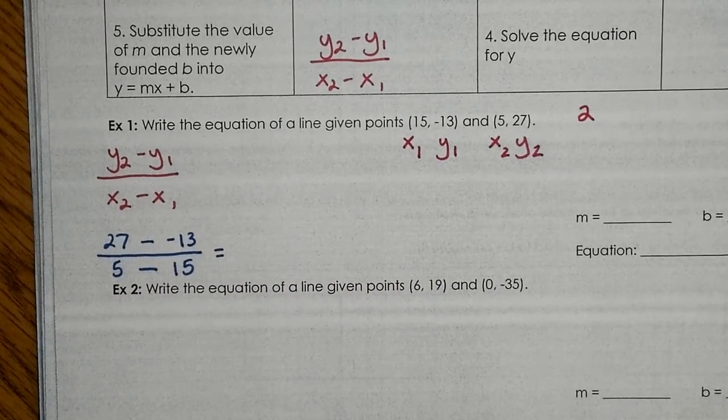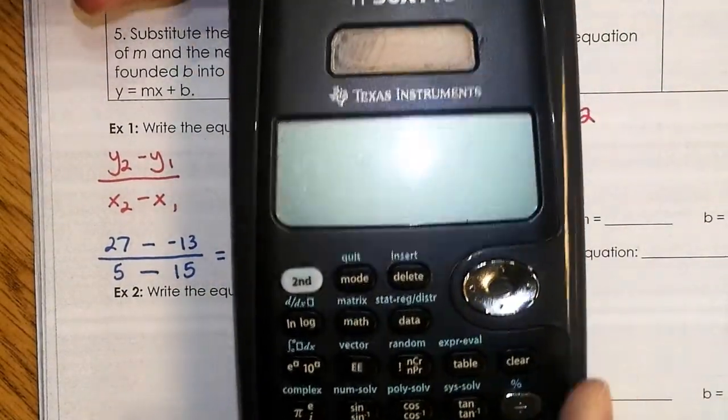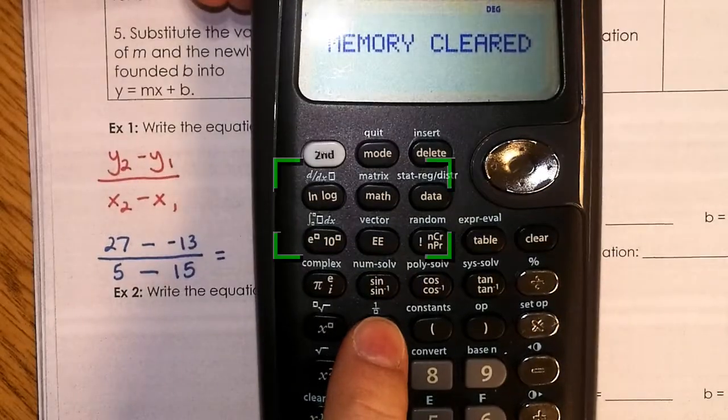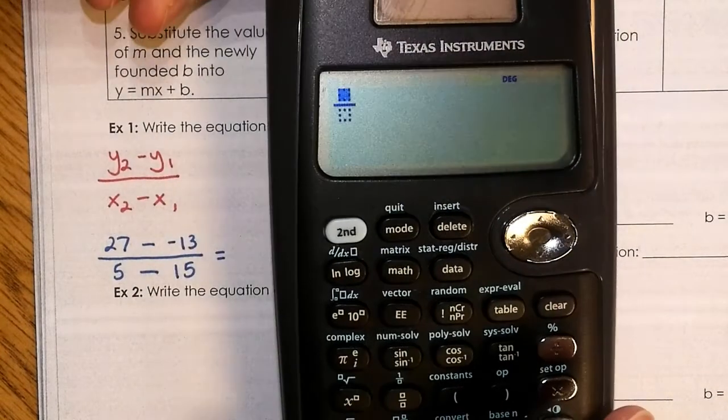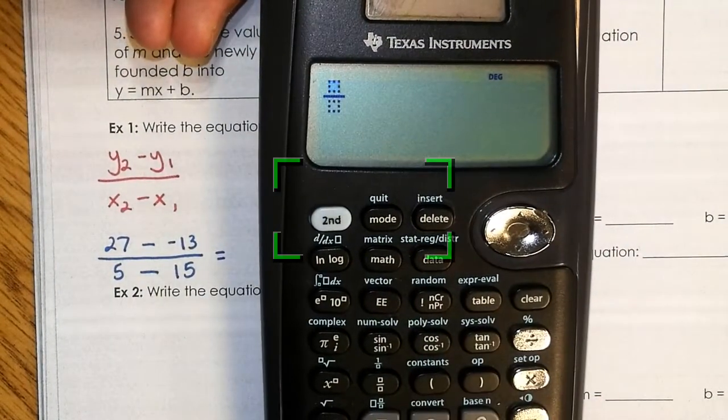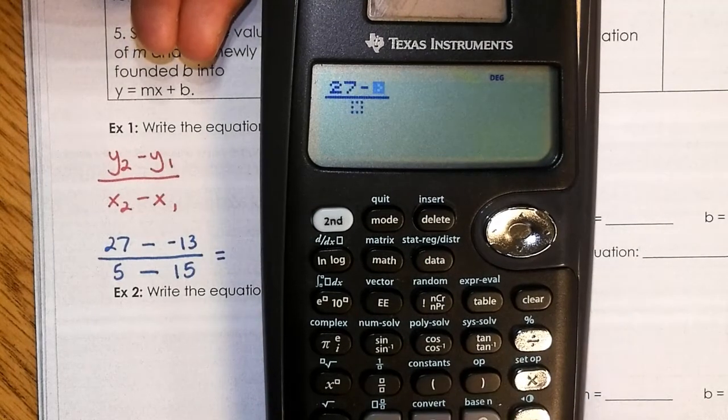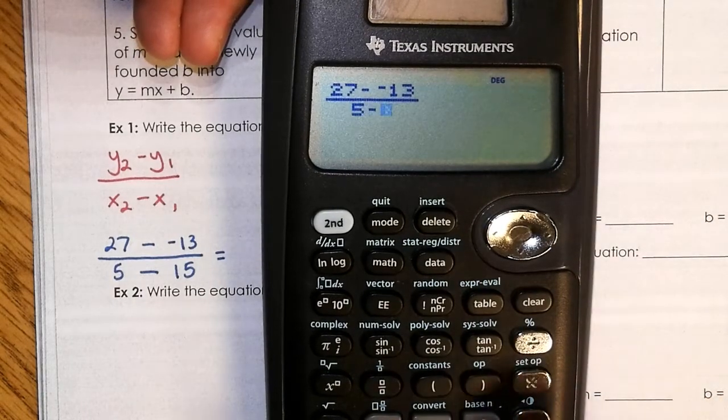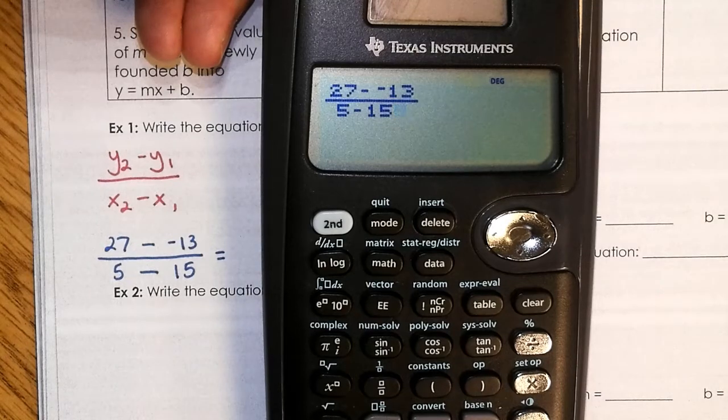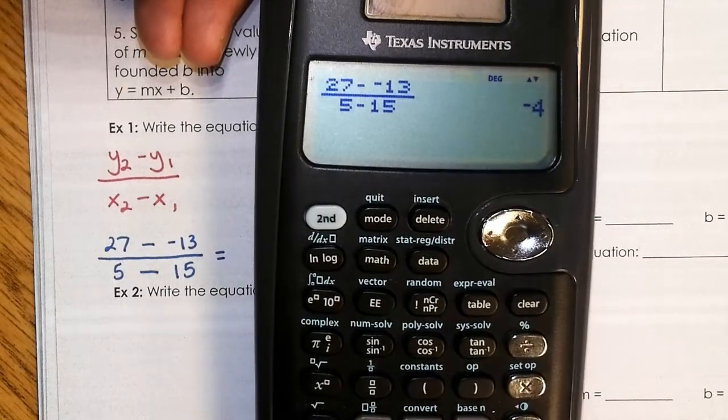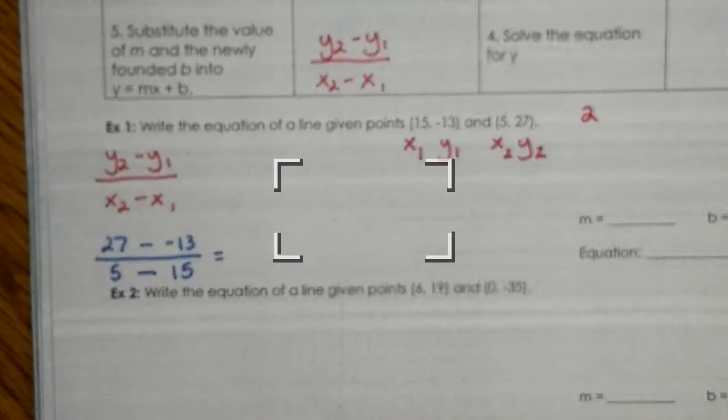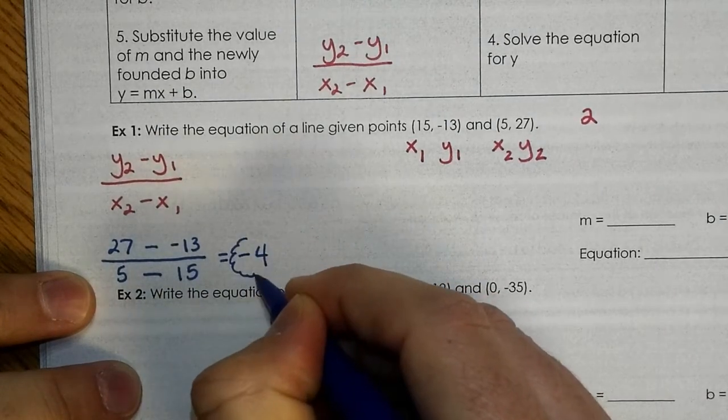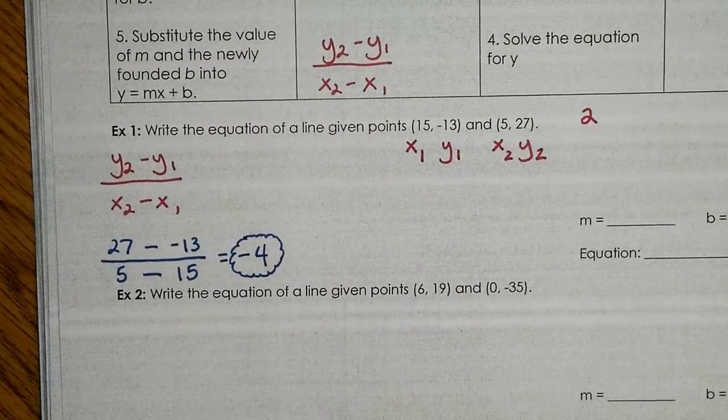Now, we plug this into our calculator. So, hopefully everybody has a calculator. What I would do if I were you, I would press the fraction button. That's right above the 7. So, I'm going to plug in exactly the way it says, 27 minus negative 13. Then, I go down to the bottom. 5 minus 15. I press enter. Yeah, did y'all get negative 4? Yeah. Perfect. So, negative 4. Put down negative 4.